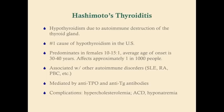Hashimoto's thyroiditis is hypothyroidism due to autoimmune destruction of the thyroid gland. This is analogous to Addison's disease in the adrenals, and this is the number one cause of hypothyroidism in the U.S. It used to be iodine deficiency, but now that we've started iodizing salt, we don't have endemic goiter as much as we used to. It predominates in females by a significant margin of about 10 to 15 to 1, and the average age of onset is about 30 to 40 years.